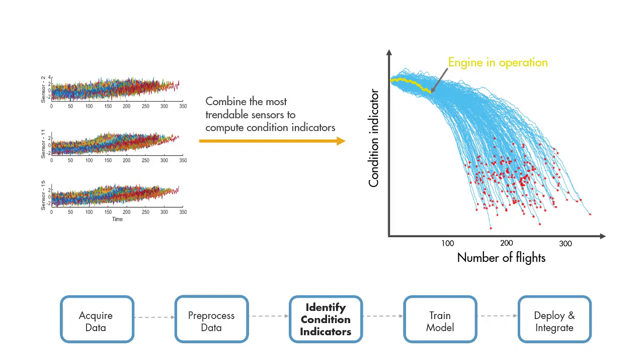Now that we have the degradation profiles of all the engines, the next step is to train a similarity model using these trajectories and estimate the remaining useful life of our engine.